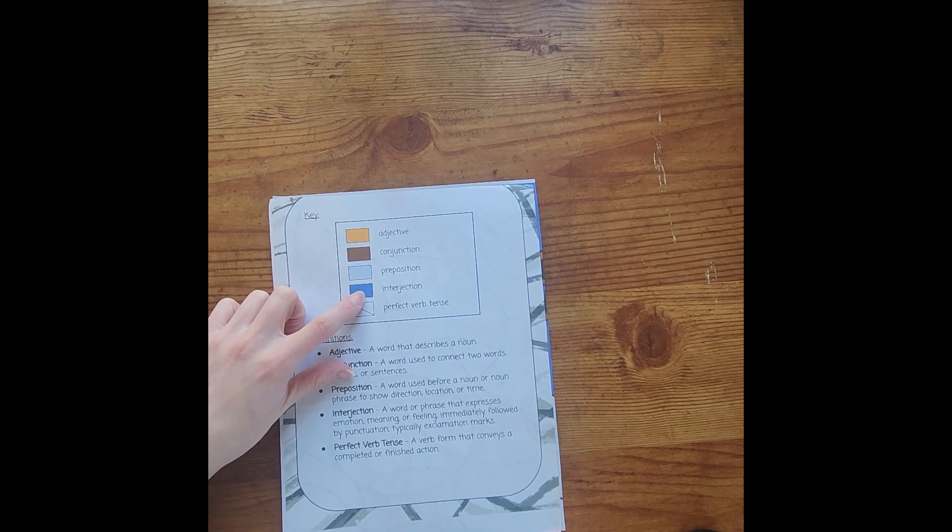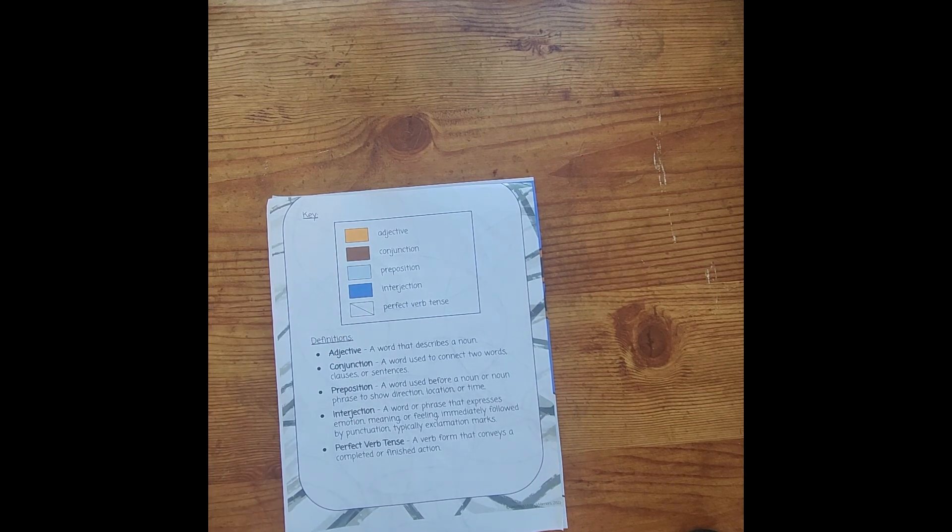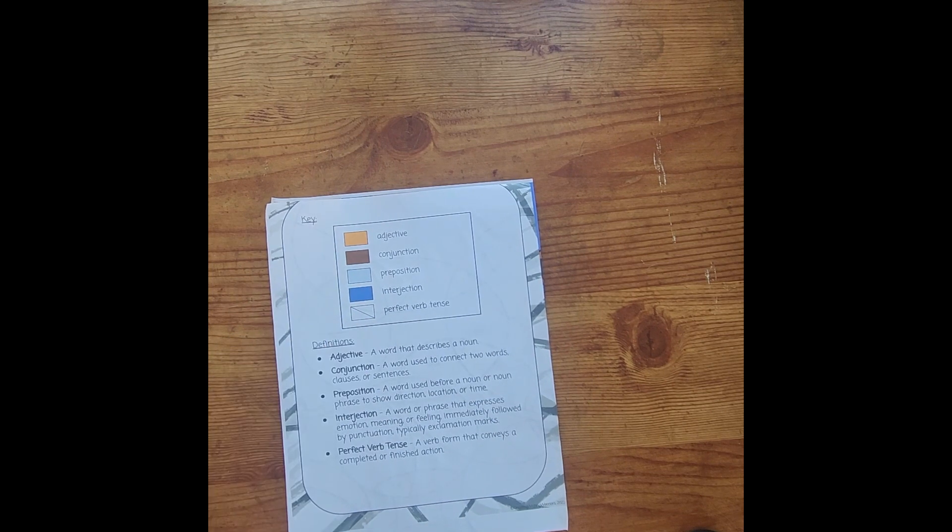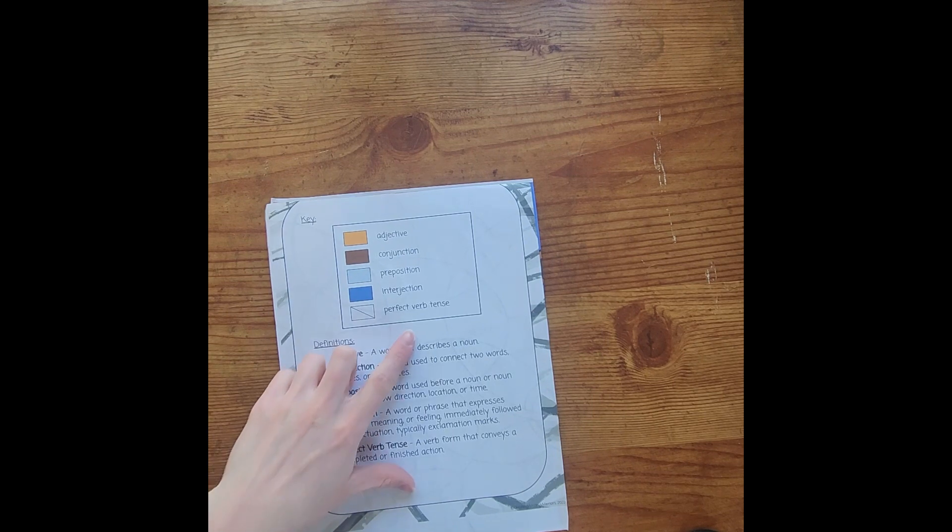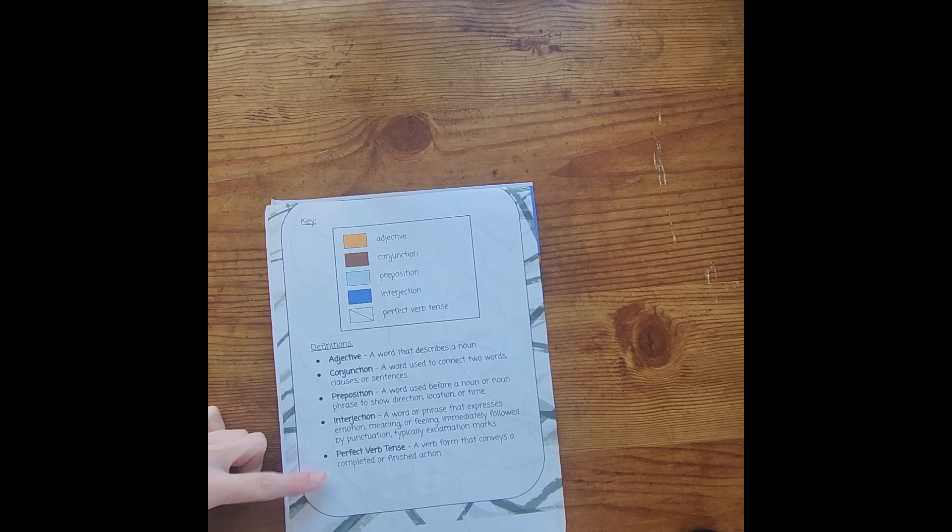for yellow, they want an adjective; for brown, conjunction; for light blue, preposition; and then blue interjection, which is different than my original draft. So I must have changed that thinking they needed to work more on their interjections than on their perfect verb tense. And then you'll see white slash, and it's clear, so it's basically whatever color you want to paint or color that is going to be the perfect verb tense.